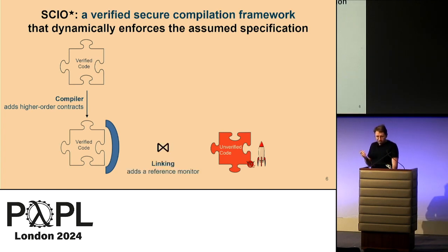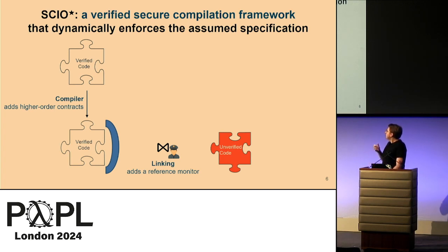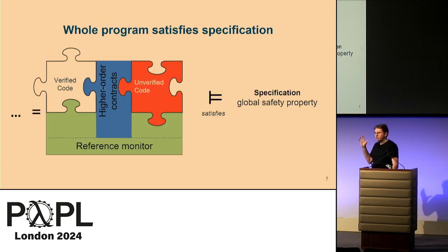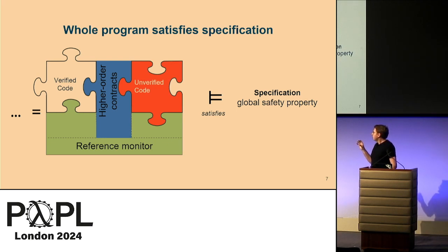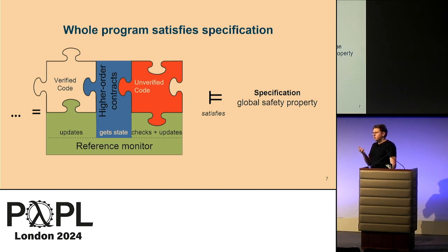So we use a second technique: a reference monitor added during linking that enforces an access control policy on the unverified code to prevent bad things from happening. The verified code interacts with the unverified code through higher-order contracts, while the reference monitor records everything that happens in both parts in its internal state, and uses that state to enforce the access control policy. The higher-order contracts also have access to this state for more expressive assumptions, but cannot update the monitor's state.